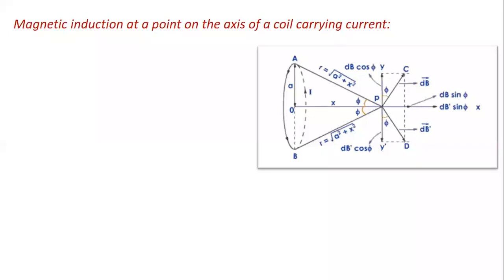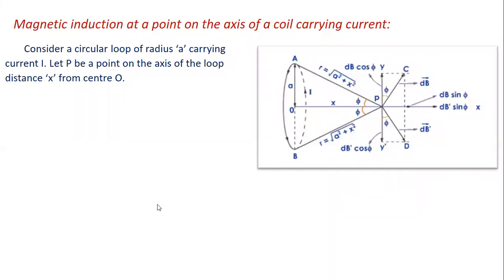Now we start a new article: magnetic induction at a point on the axis of a coil carrying current. We consider a circular loop of radius A, carrying current I, with the axial point P at a distance x from the centre O.